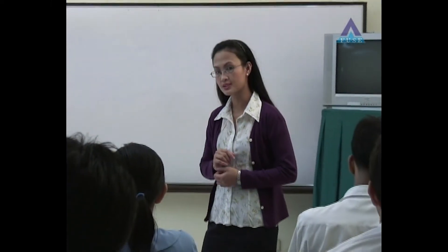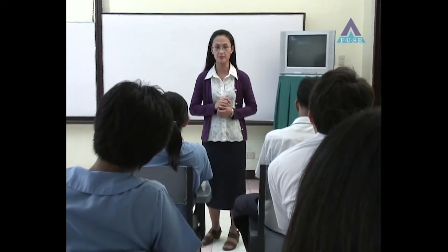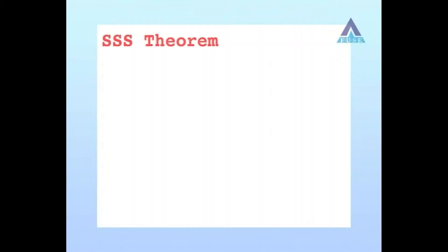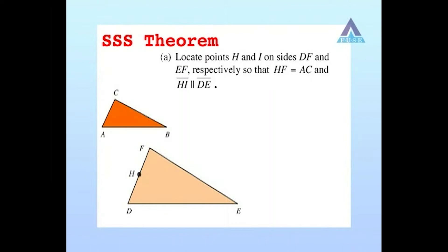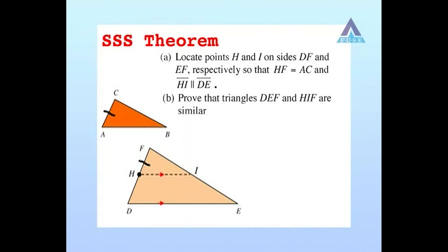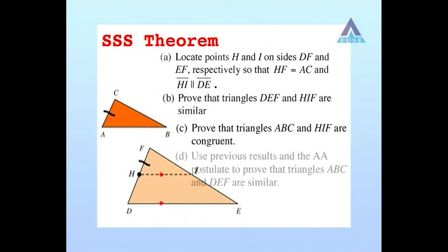Before we go to the next theorem, can one of you do a recap of what we just did to prove the SSS similarity theorem? The steps we followed are: A. Locate points H and I on sides of triangle DEF so that HF equals AC and segment HI is parallel to segment DE. B. Prove that triangles DEF and HIF are similar. C. Prove that triangles ABC and HIF are congruent. And D. Use previous results and the AA postulate to prove that triangles ABC and DEF are similar.